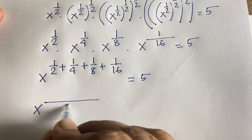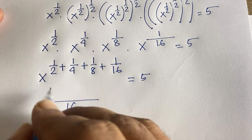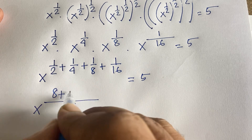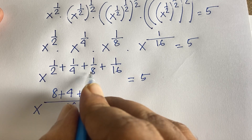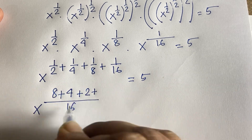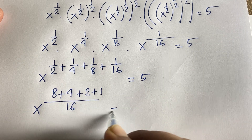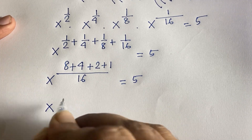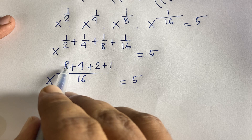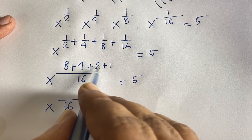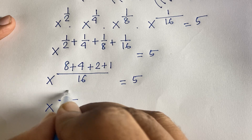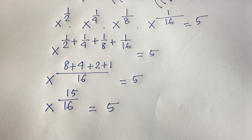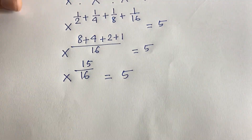The least common denominator is 16. So 1/2 = 8/16, 1/4 = 4/16, 1/8 = 2/16, and 1/16 = 1/16. Adding: 8 plus 4 is 12, plus 2 is 14, plus 1 is 15. So we get x to the power of 15/16 equals 5.